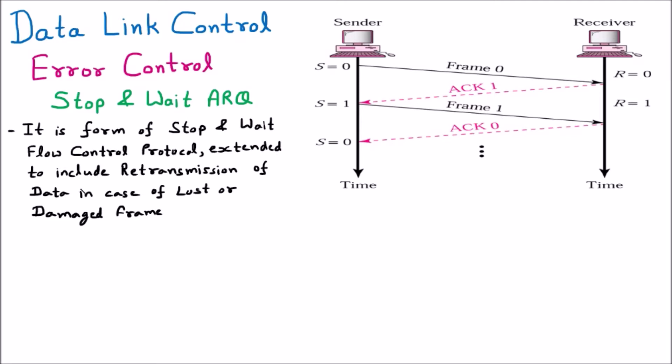In the flow control mechanism, we have to see how much flow of data we have to send. Stop and wait is a mechanism where the sender sends data and waits for the acknowledgement, and after that sends the next data. That stop and wait mechanism of flow control is extended and added with ARQ, giving us the power for retransmitting packets whenever a packet is lost or damaged.